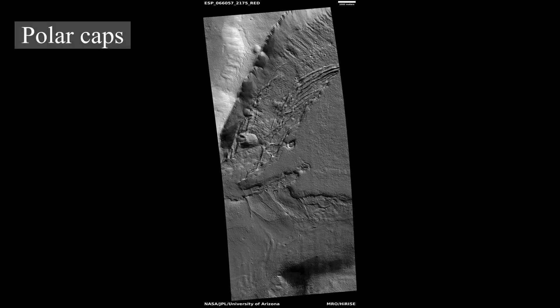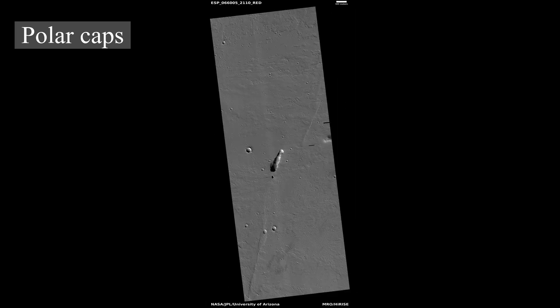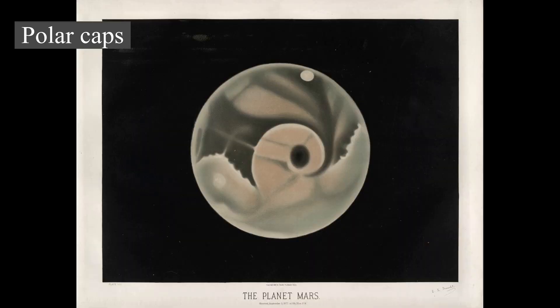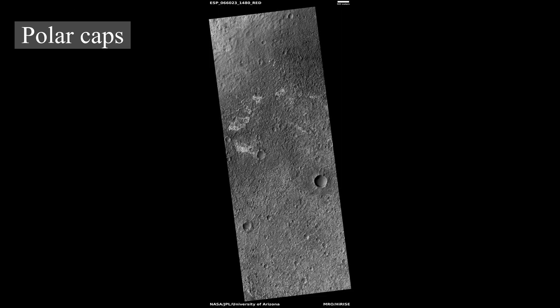Mars has two permanent polar ice caps. During a pole's winter, it lies in continuous darkness, chilling the surface and causing the deposition of 25–30 percent of the atmosphere into slabs of CO₂ ice (dry ice). When the poles are again exposed to sunlight, the frozen CO₂ sublimes. These seasonal actions transport large amounts of dust and water vapor, giving rise to Earth-like frost and large cirrus clouds. Clouds of water ice were photographed by the Opportunity rover in 2004.